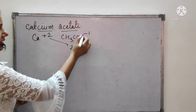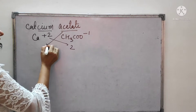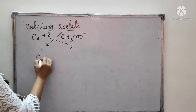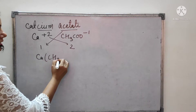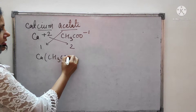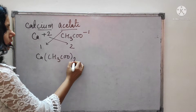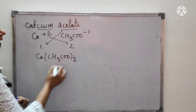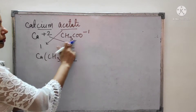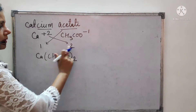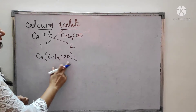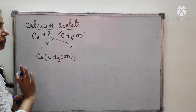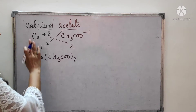We have to keep the charges balanced. So for calcium acetate, the formula becomes Ca(CH3COO)2 — the acetate group is written in brackets with a subscript 2, because calcium has a valency of 2. So the formula for calcium acetate is Ca(CH3COO)2.